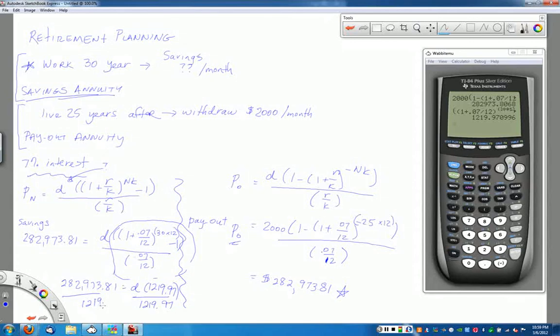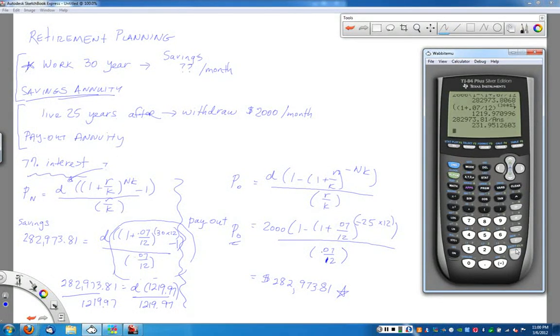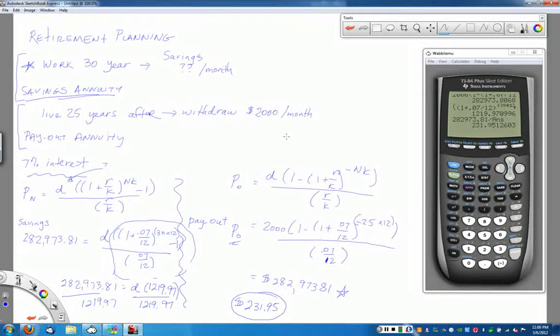Divide by that 1,219 number that we just calculated. Take that original amount of how much I need to retire, 282,973.81 divided by that last answer. I need to put $231.95 every month into my savings account for 30 years, and at the end I will have enough money that I can take out $2,000 a month for 25 years.